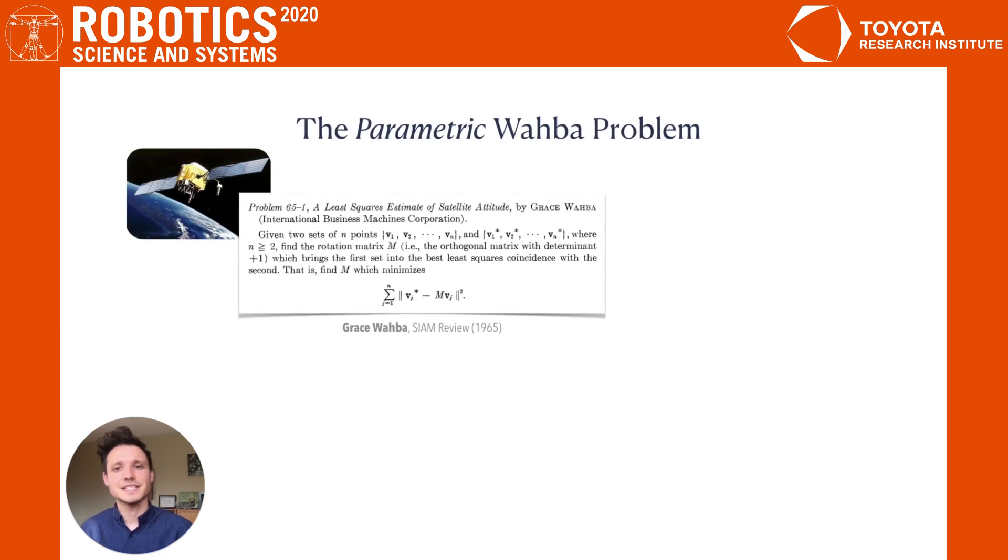As a motivating example, we take the Wahba problem, which originates from the context of satellite attitude determination and seeks a least squares estimate of the rotation that best aligns two sets of noisy point measurements. This problem can be elegantly formulated as a quadratically constrained quadratic program over unit quaternions, where the data matrix A summarizes correspondences and uncertainty.